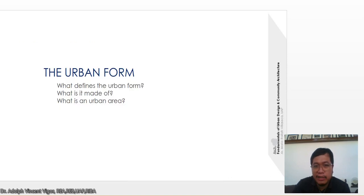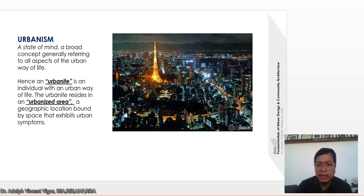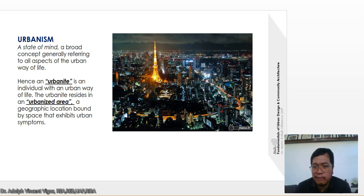Let's move on to urban form — what defines it, what it is made of, and what constitutes an urban area. Urbanism is a state of mind, a broad concept generally referring to all aspects of the urban way of life. An urbanite is an individual with an urban way of life who resides in an urbanized area — a geographic location bound by space that exhibits urban symptoms.